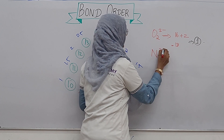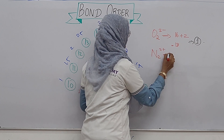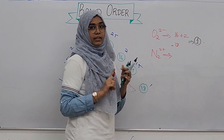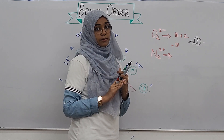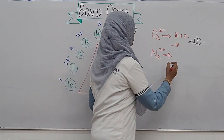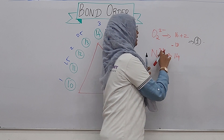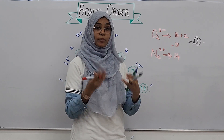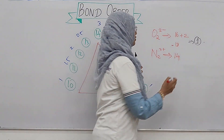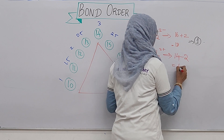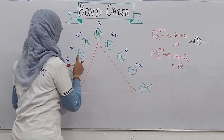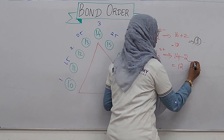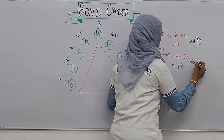Next, N2²⁺: N2 normally has 14 electrons (one N is 7, so two N atoms give 14). For N2²⁺, 2 electrons are removed, so 14 minus 2 equals 12. In the triangle, 12 gives a bond order of 2. So N2²⁺ has a bond order of 2.